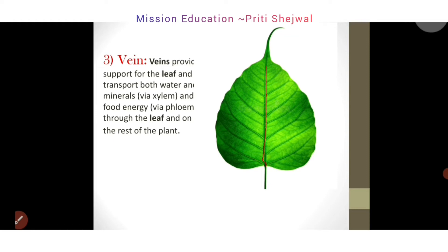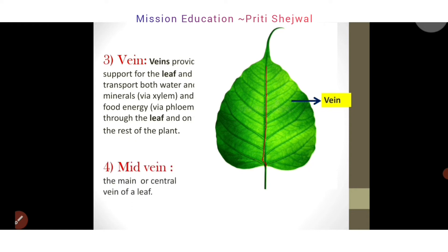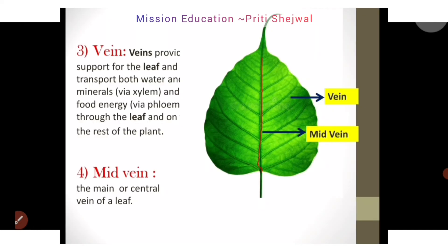The third part is the vein. What is a vein? Veins provide support for the leaf and transport both water, minerals, and food energy through the leaf to the rest of the plant. So the lines which you can see on the leaf are called veins. The fourth is the mid vein — the main or central vein of the leaf. You can see the red mark in the center — that is the mid vein.